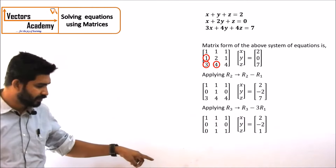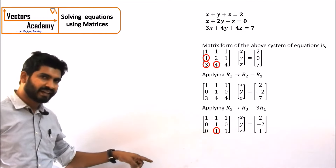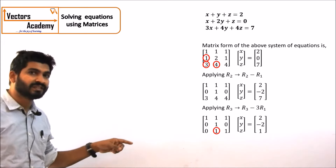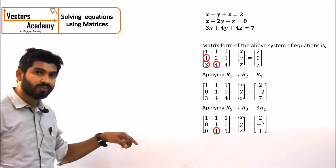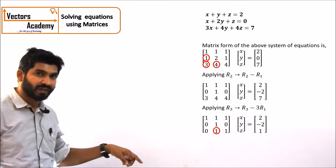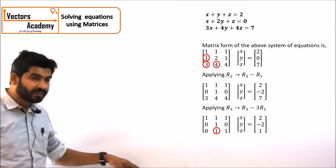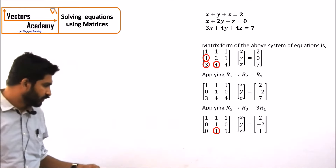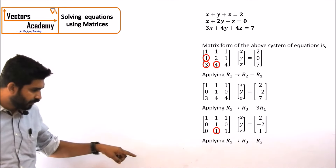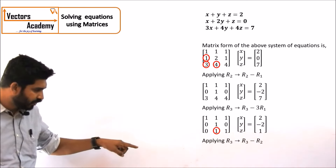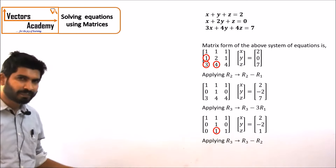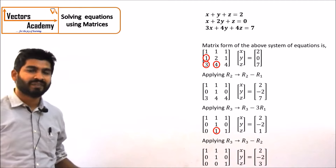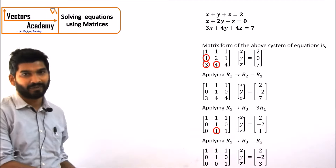Now we have to make the second element in row 3 equal to 0. We cannot use row 1 to make the changes — we have to use row 2 to make the changes, because if you use row 1, the first element of the third row, which has already been made 0, will change. The second element of row 3 is 1 and the second element of row 2 is also 1, so we subtract them. The last change will be R3 changes to R3 minus R2, and after that change what we get is an upper triangular matrix.